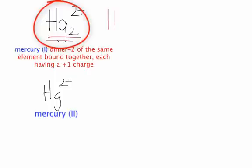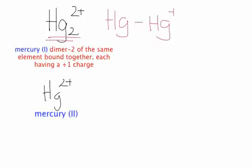So what in actuality, there's two mercuries bonded together, each with a +1 charge. That's why it's an Hg2, because it's bonded together, each with a +1. Since there's two of them, that's why it's overall charge of a +2. So this is what mercury 1 looks like.